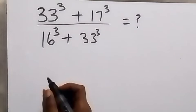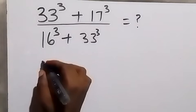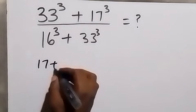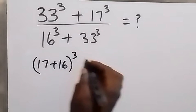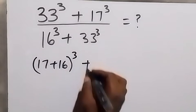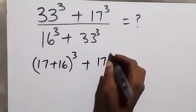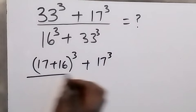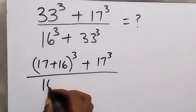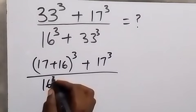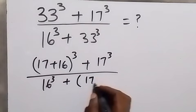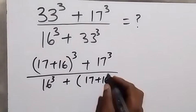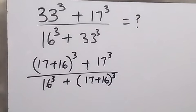From here, let's write 33 again as 17 plus 16. Then we have 33 raised to power 3, here we have 17 raised to power 3, then divided by 16 raised to power 3, then plus. Also here we have 17 plus 16 raised to power 3.